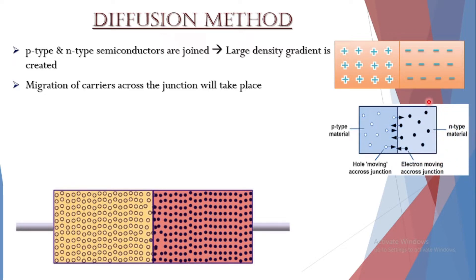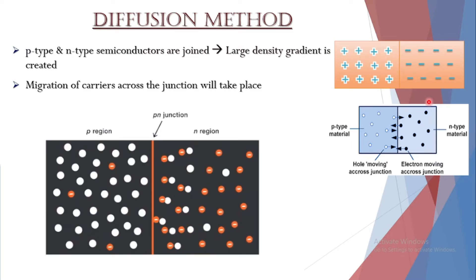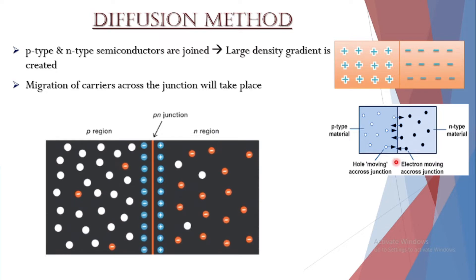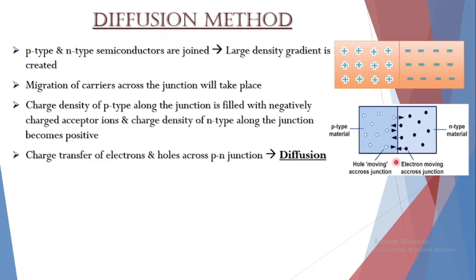Because electrons have moved across the P-N junction from N-type to P-type, they leave behind positively charged donor ions on the N side. Holes from the acceptor impurity migrate across the junction in the opposite direction, into the region with a large number of free electrons. As a result, the charge density of P-type along the junction is filled with negatively charged acceptor ions, and the charge density of N-type becomes positive. This charge transfer of electrons and holes across the P-N junction is called diffusion, and it is the main criteria that brings the system back to equilibrium.